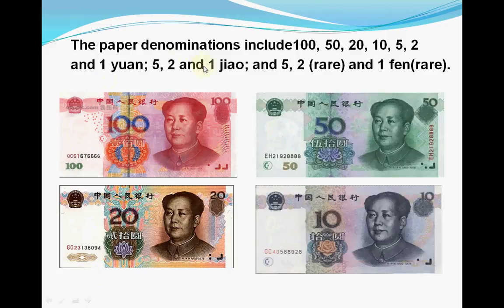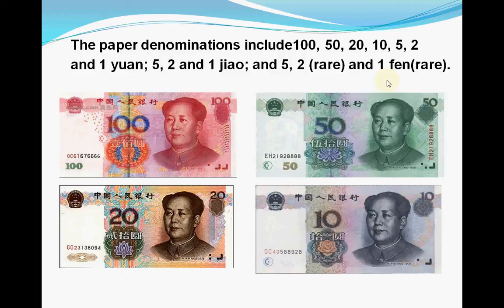The paper denominations of Chinese money include 100 yuan, 50 yuan, 20 yuan, 10 yuan, 5 yuan, 2 yuan, and 1 yuan. It also includes 5 jiao, 2 jiao, and 1 jiao. There are also 5 fen, 2 fen, and 1 fen, but fen paper money is really rare now, and some have already stopped circulation.